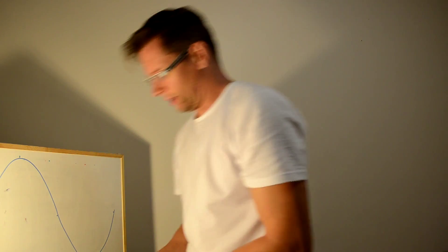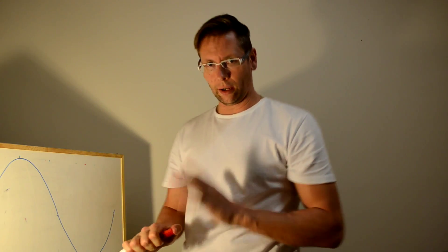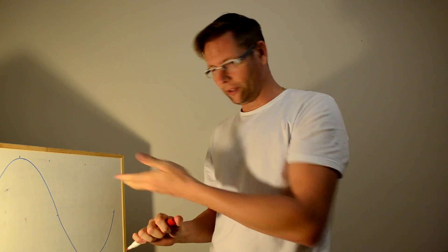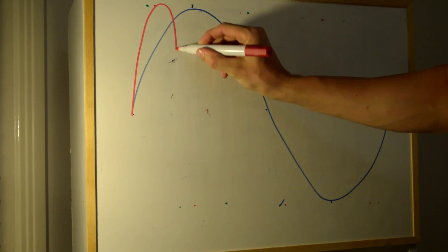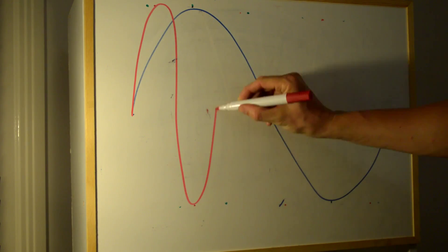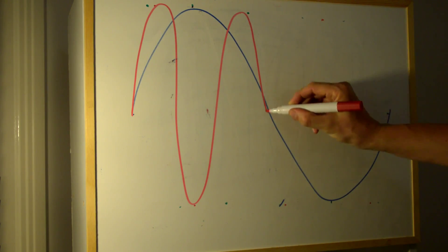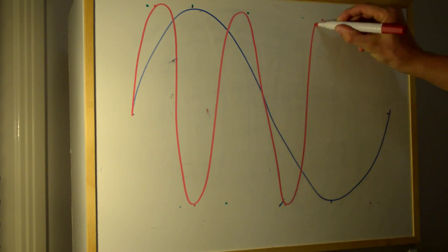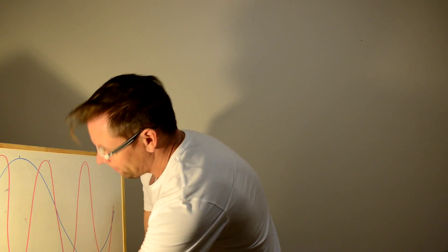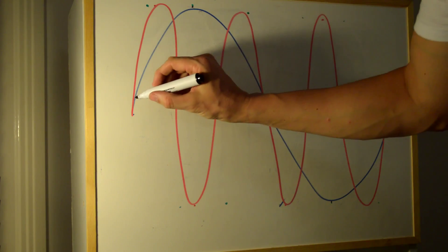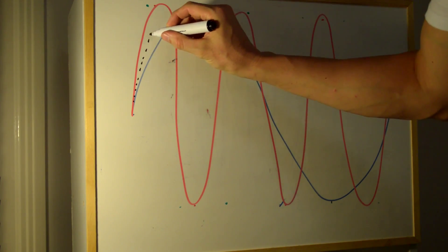Now, if we added another signal to that that was 3 times that, so 3 Hz, we would just draw that in there. If we add those two together, so we take sort of midway between the two.